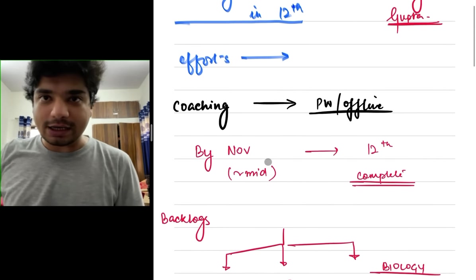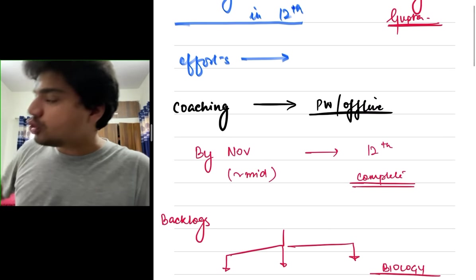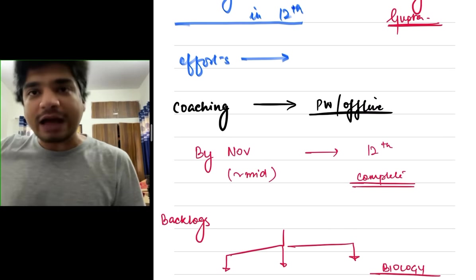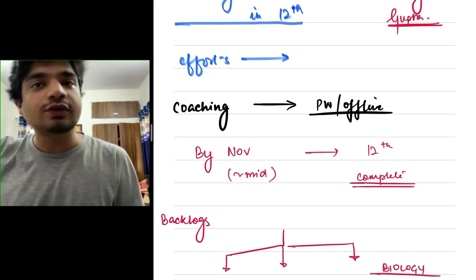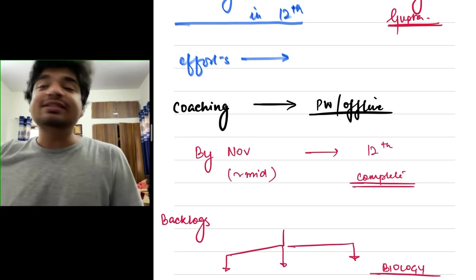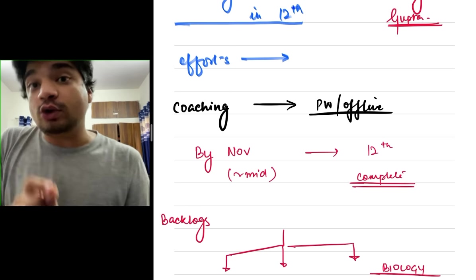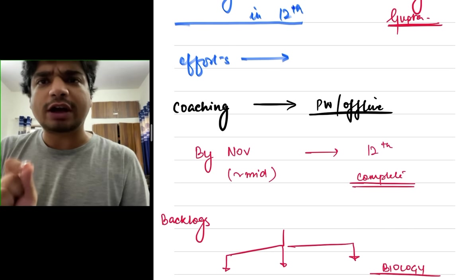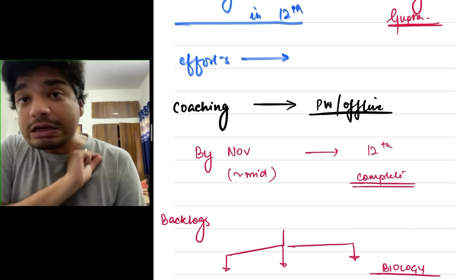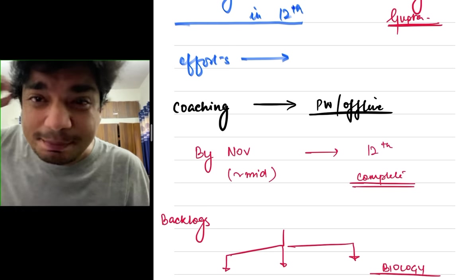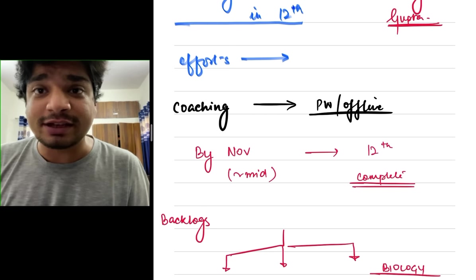So by November end, remember by November end, you should keep on doing your 12th standard as it's being done in coaching and they will try to finish those syllabus by November end. At the same point of time you have to do your 11th bio. One chapter per week you have to do NCERT, nothing else absolutely nothing else. You will be committing the biggest blunder of your life if you are doing anything except NCERT.